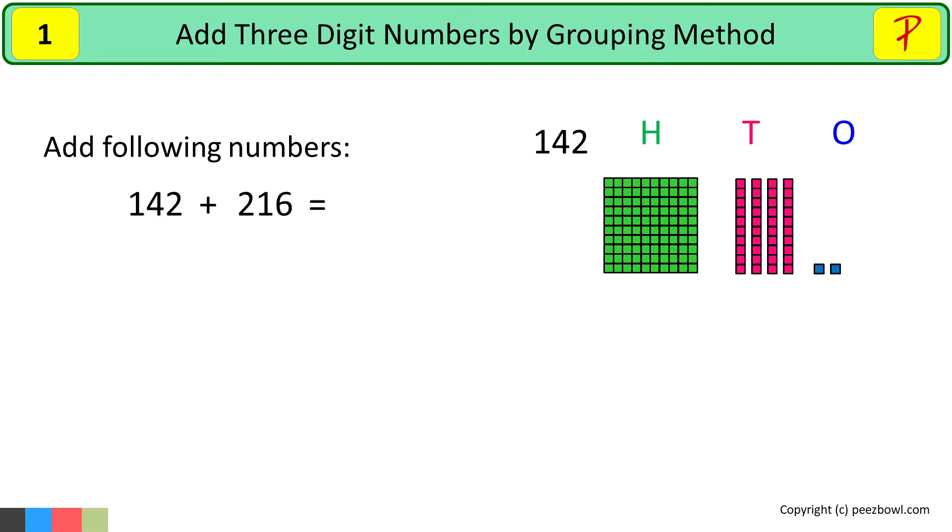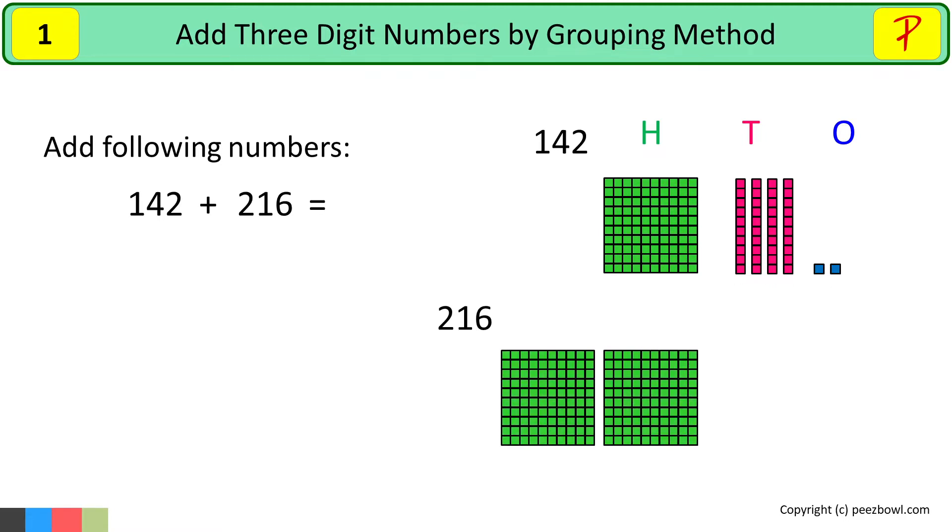Same way, we can show number 216 in terms of hundreds, tens and ones. As we have two at the hundreds place, so I have two hundreds squares. At the tens place, there is one. So I have one tens line and there is six at the ones place. So we have six squares to show six ones.